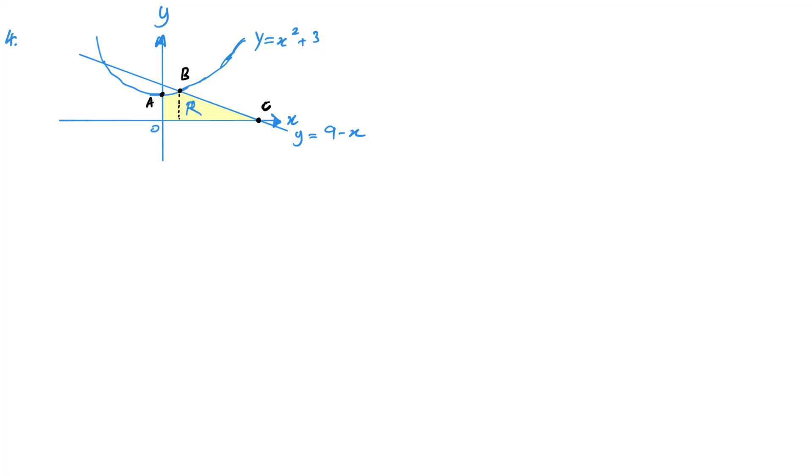For this one, what I need to do is break it up into this triangle, this side on the right, and then the area under the curve here. So area under the curve between A and B, and then the triangle, which will go from B as far as C.